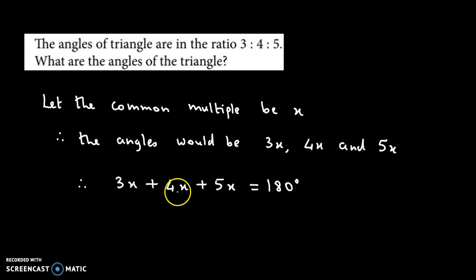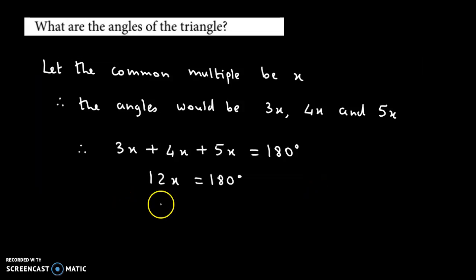Now 3 plus 4, that's 7; 7 plus 5, that's 12x. So 12x = 180°. From here we obtain the value for x. So x = 180/12.